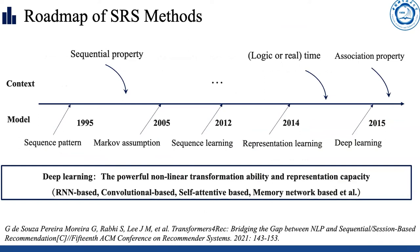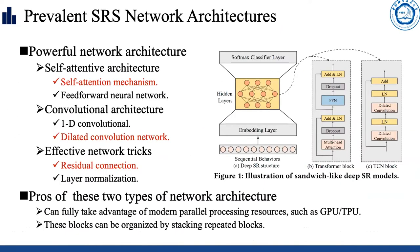This slide shows that a lot of efforts have been devoted in this area. Recently, much of the recent progress in sequential recommendation has been driven by improvements in model architecture from the field of deeper sequence modeling, like natural language processing. Among them, self-attentive and convolutional architectures have become very prevalent in recent years.